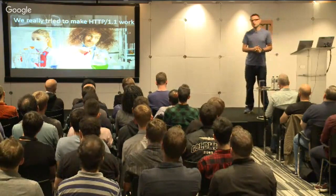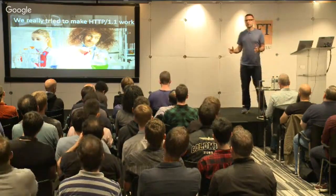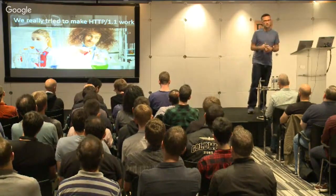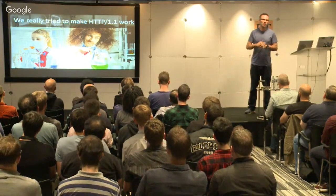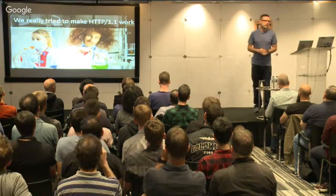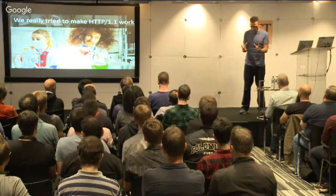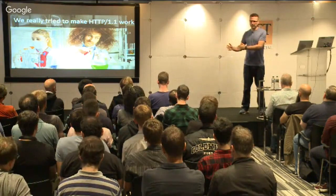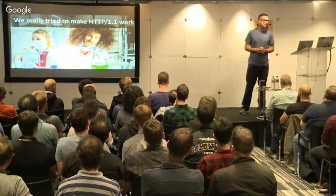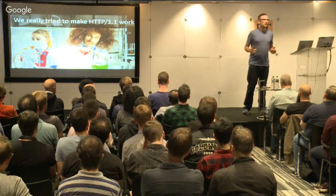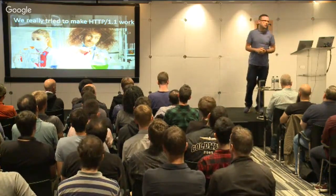We did things like domain sharding — spreading content across multiple different domains to open up extra parallel connections within a browser. Most modern browsers support up to six concurrent connections per domain, so domain sharding opened up additional concurrent connections. We also did image spriting, combining images into one large image requiring only one TCP connection to download. And we did concatenation — merging JavaScript and CSS files together into one large file to reduce additional connections.